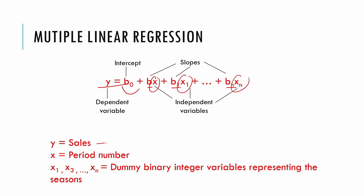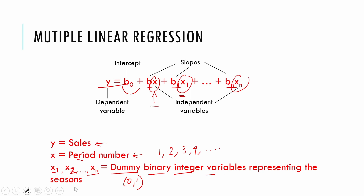In case of time series, y will be sales or whatever the time series variable is. The first independent variable x will be our period number — that means 1, 2, 3, 4 — the time series period number. From the next independent variable onward, x1, x2 up to xn, these will be dummy binary integer variables, taking zero or one values, representing the seasons. So this multiple regression model can specify both the trend and the seasonality.